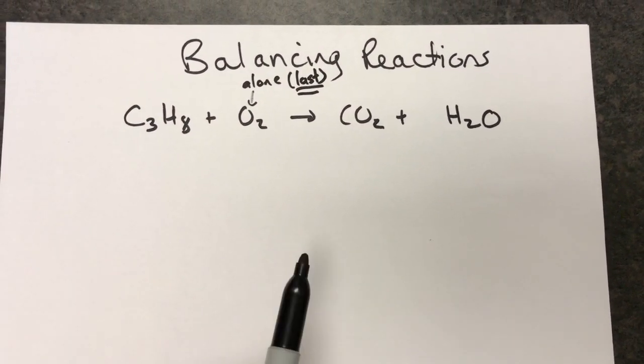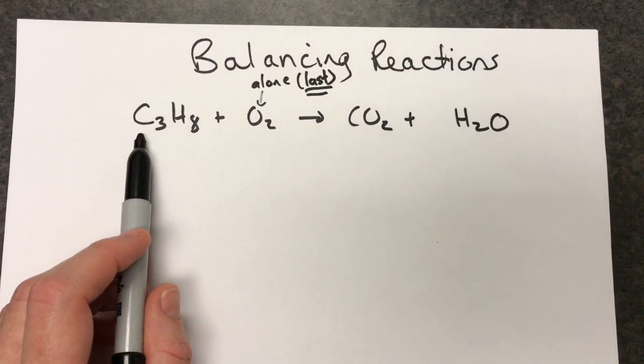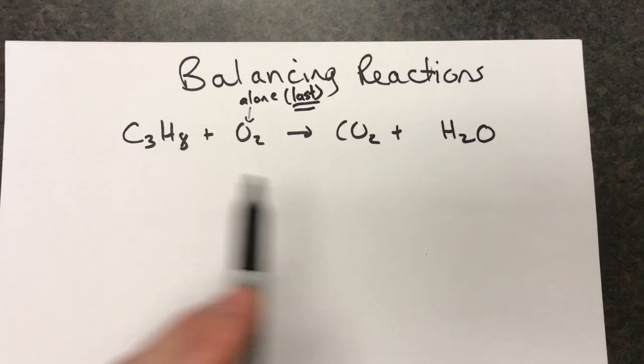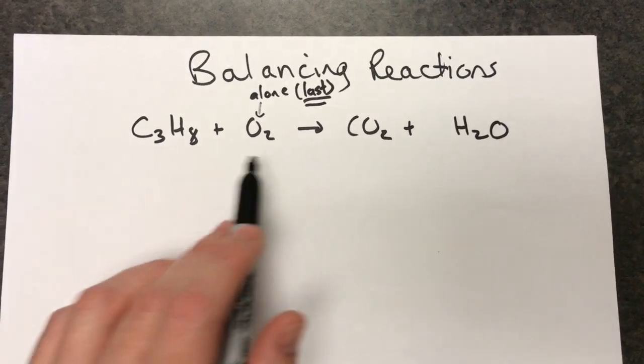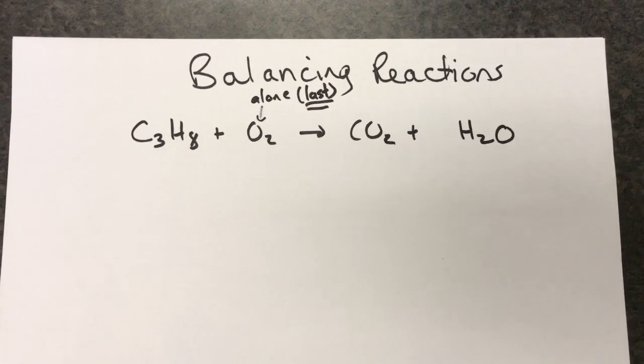Then we can look at everything else and look for deviation. Here we have three carbons on this side and one carbon on that. Eight hydrogens on that side and two on that. It really doesn't matter. They both have points of deviation. We have to change both the carbon and the hydrogen.